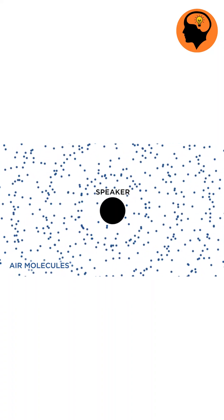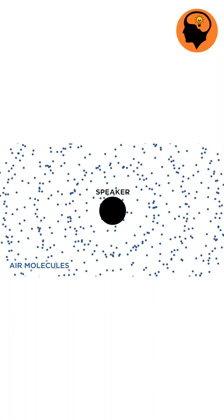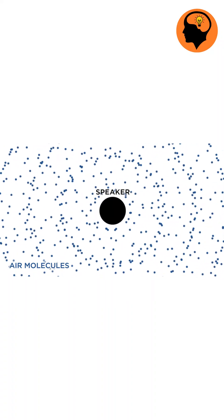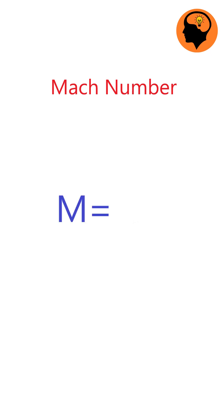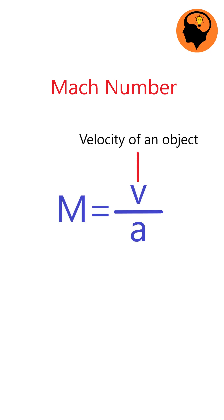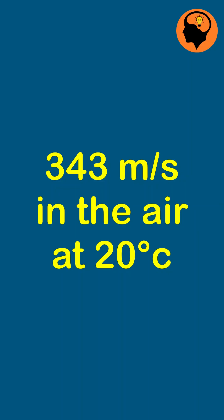It is defined as the ratio of the object's speed to the speed of sound in air and is expressed as M equals v by a. Here, v is the object's speed and a is the speed of sound in air, which is approximately 343 meters per second at 20 degrees Celsius.